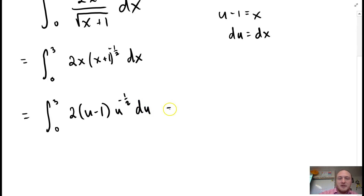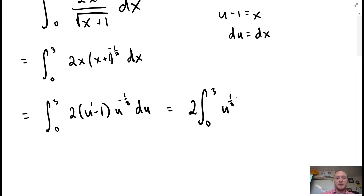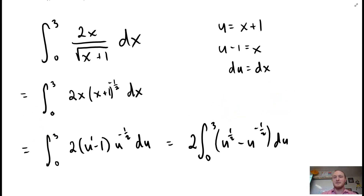Substituting in: 2 times x — where x is u minus 1 — times u to the power of negative one-half, du. I'll pull the 2 out front, then distribute u to the negative one-half inward: u to the power of 1 times u to the negative one-half gives u to the positive one-half, minus u to the power of negative one-half, du.